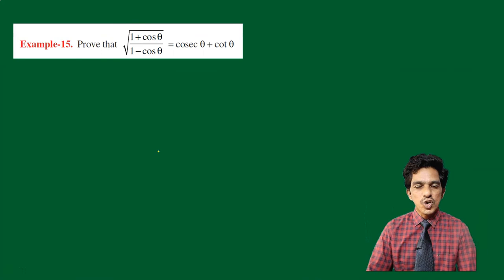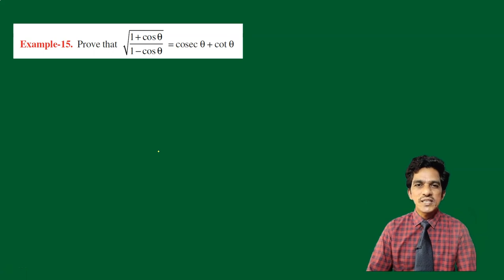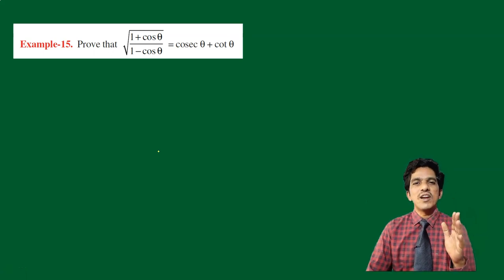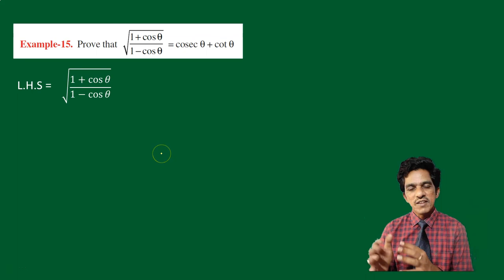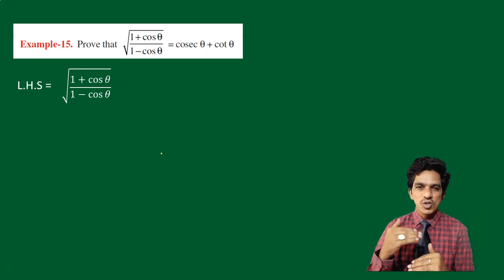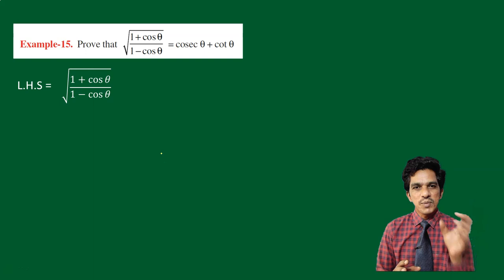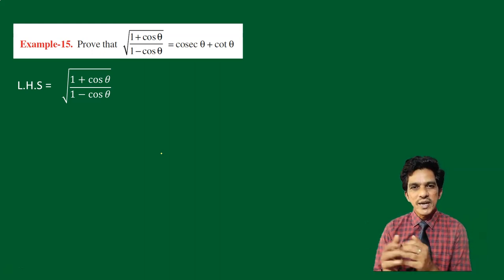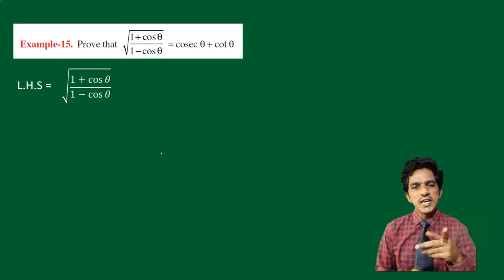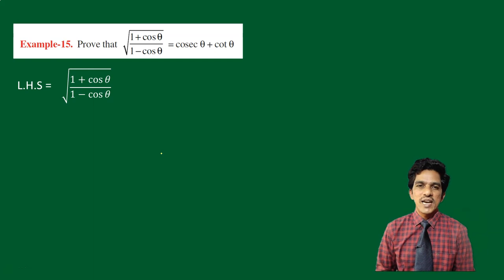Let us move on to example number 15. Prove that the square root of 1 plus cos theta by 1 minus cos theta is equal to cosecant theta plus cot theta. On the left side, we have square root of a fraction where the numerator and denominator are two binomials that differ only by a plus or minus sign — it's like rationalizing the denominator.